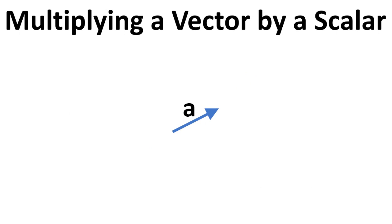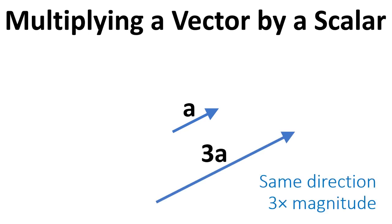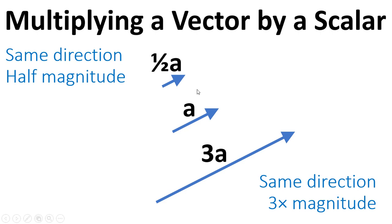In terms of multiplying vectors by a scalar, if we take the example of A being this vector here, if we multiply by 3, we get the same direction but 3 times the magnitude. If we multiply by a half, again, it's the same direction but only half the magnitude, and that's represented by the fact that this line is half the length of this line.